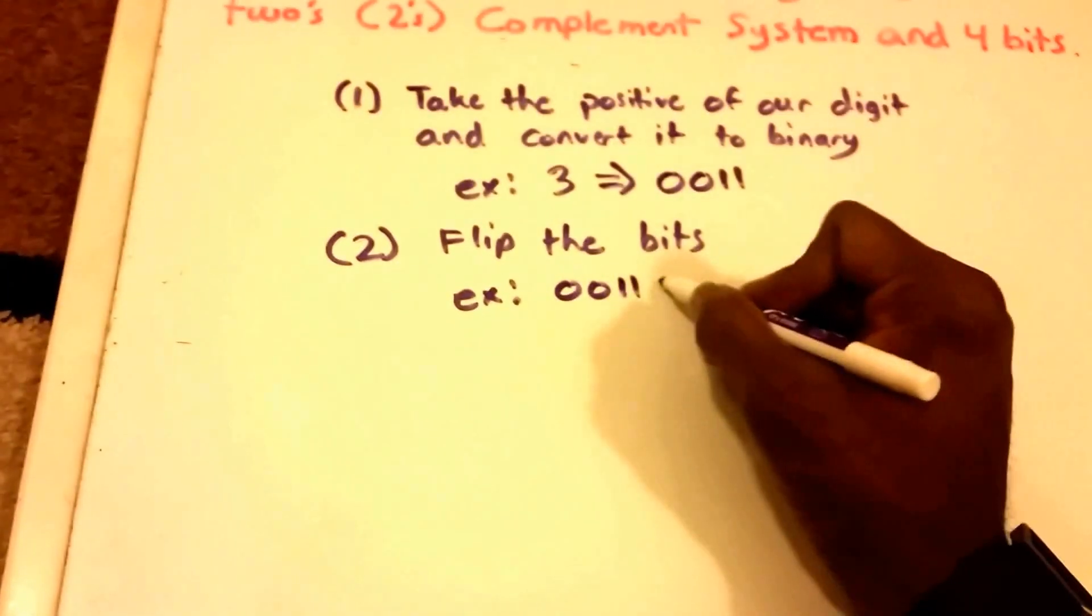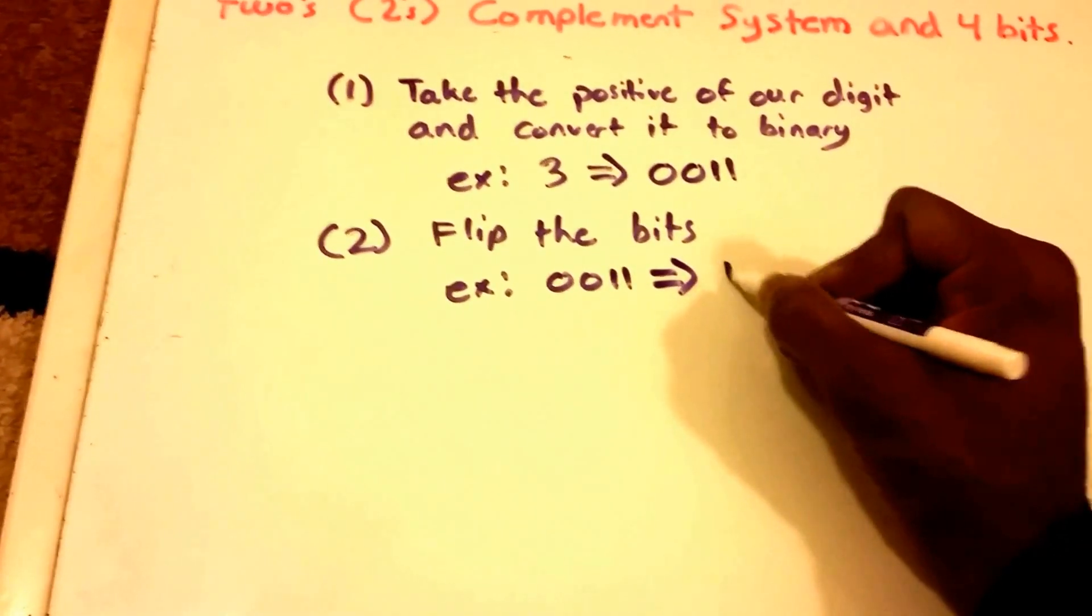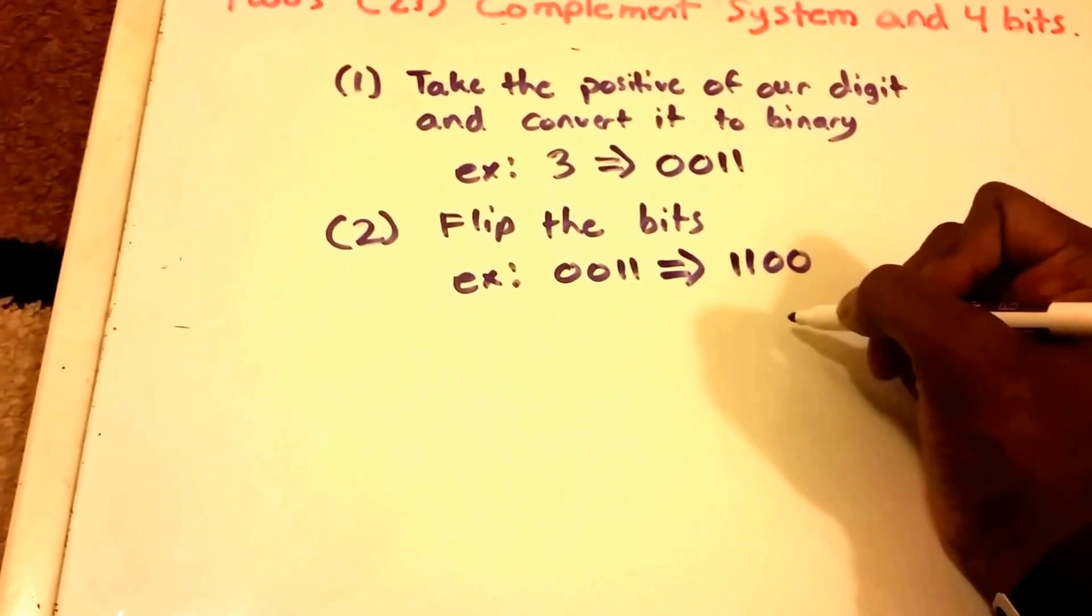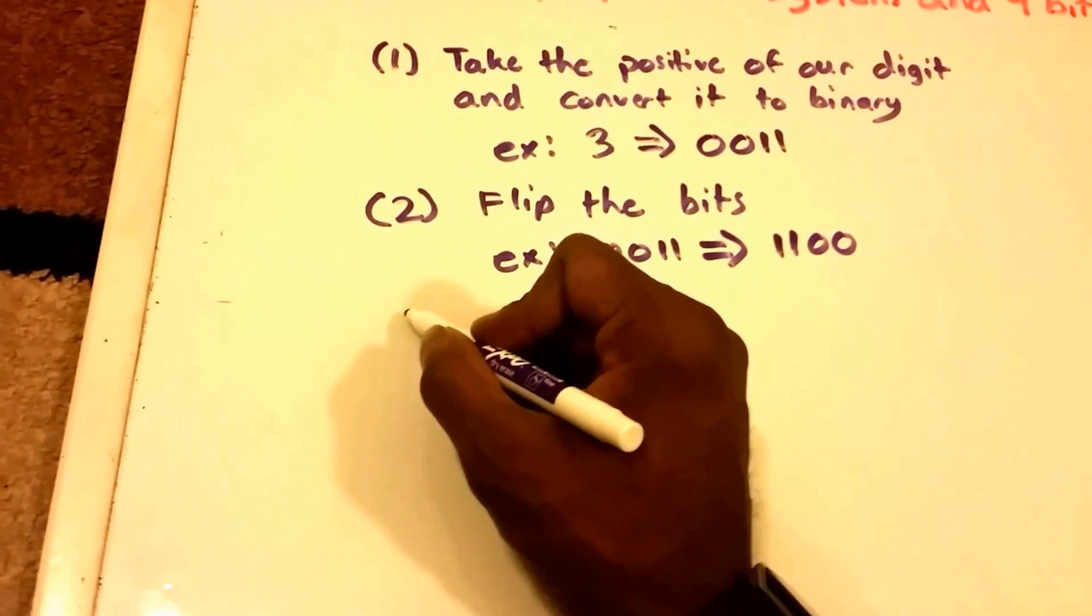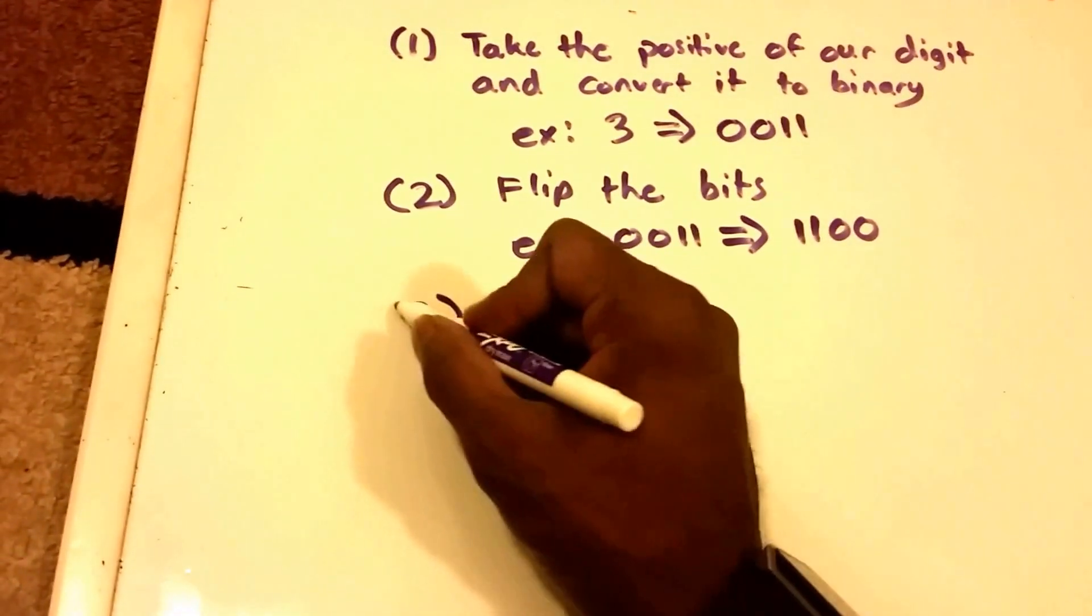Now 0011 is going to become 1100. And then our final step, step three, is we're going to add one to our previous conversion.